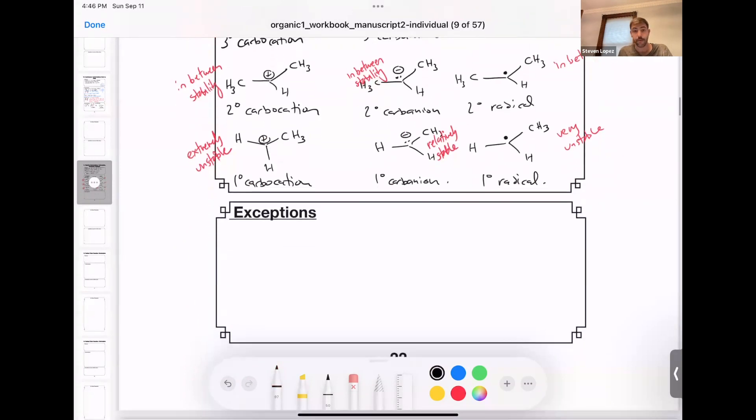So you can have primary carbocations in our reaction flasks if there are mitigating factors that help to stabilize this positive charge. So one of those ways is through resonance. Another way is through induction. So let's give an example of a primary carbocation that's relatively stable.